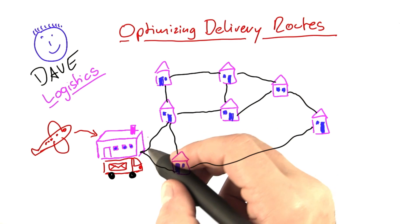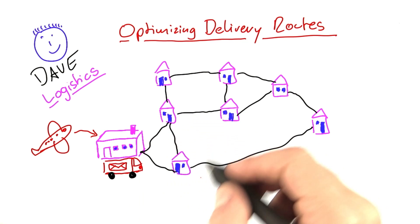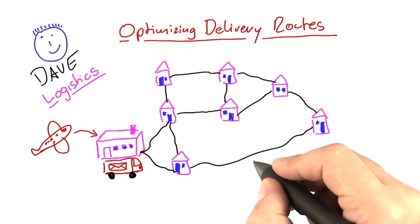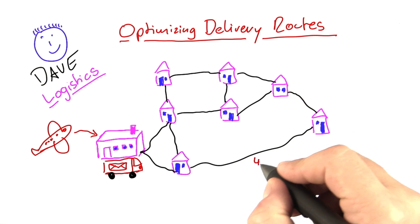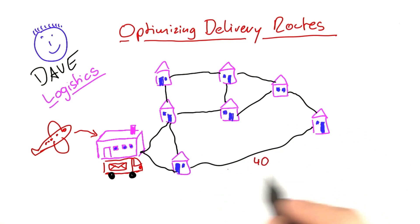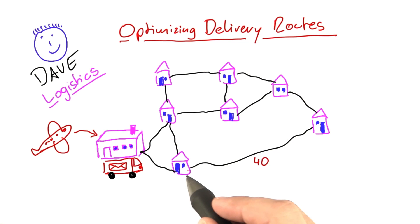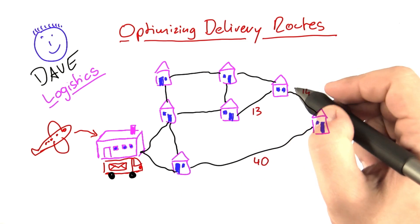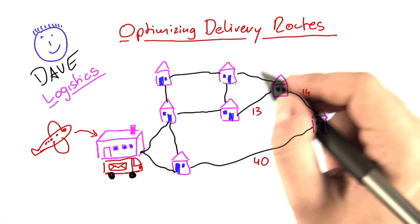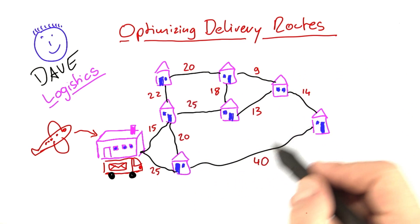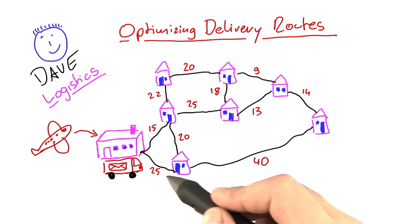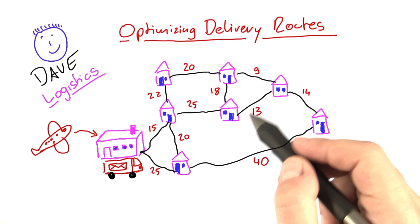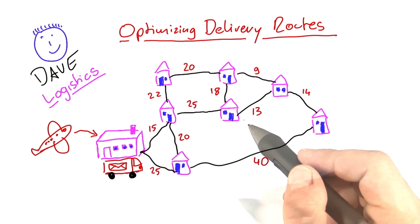Of course, there are roads that connect the houses, but not every house is connected to each other directly, and the roads also have different lengths — specified in minutes. So if there's a 40 here, it means you need 40 minutes to get from one house to another, then 14 from this house to this house, and 13 from this house to this one, and so on. This looks very much like a graph, except that the edges now have a certain distance or time attached to them.